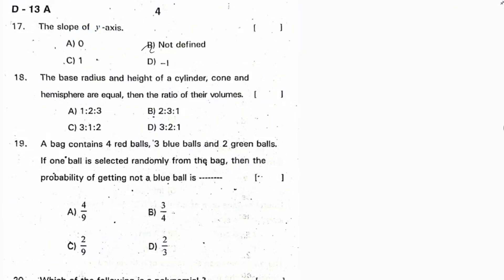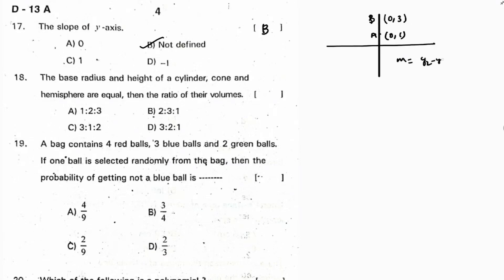Next: what is the slope of the y-axis? The slope of the y-axis is undefined. Taking two points on the y-axis, say A(0,1) and B(0,3): slope = (y₂ − y₁)/(x₂ − x₁) = (3 − 1)/(0 − 0) = 2/0, which is not defined. Correct option is B.